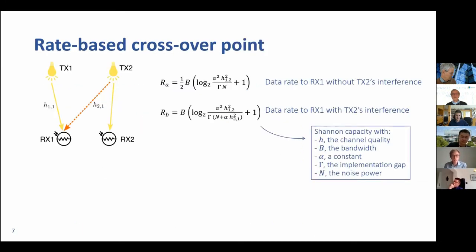What we propose is to come up with a rate-based crossover point. Why is it called rate-based? Because we are looking at the resulting data rate. We have two configurations. Configuration one is that transmitter one sends to receiver one without interference from transmitter two, so transmitter two is silent. Using the channel capacity formulation, we see that we don't have interferers in the denominator. However, we have a price to pay because we can only operate half of the time, 50% for transmitter one and 50% for transmitter two.